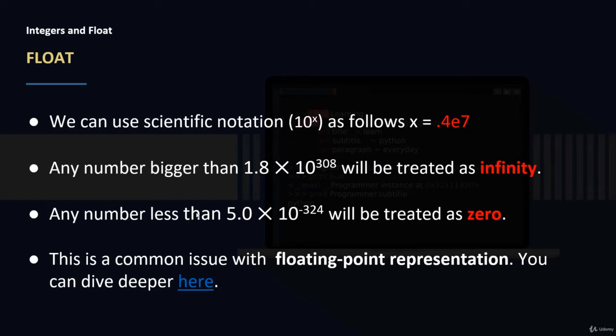In Float, we can use the scientific notation. If we say x equals 0.4E7, then this means 0.4 times 10 to the 7th. So this means 400,000.